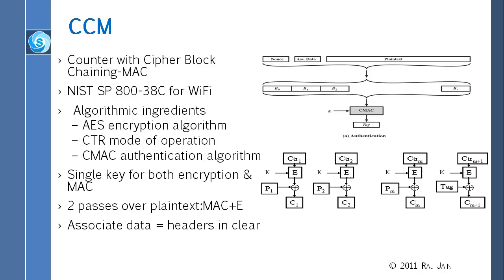That tag is used here. You use the AES encryption algorithm in CTR mode of operation, and CMAC authentication. A single key is used for both encryption and MAC. The only problem with this algorithm is that you have to make two passes over the plaintext — one for the MAC and then one for the encryption. Going back to the four possibilities, MAC is first because you need the tag before you can use it — so this is MAC-then-Encrypt, MTE.